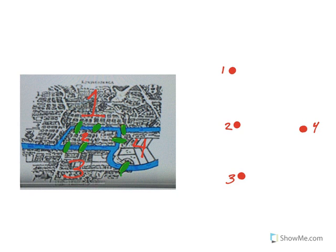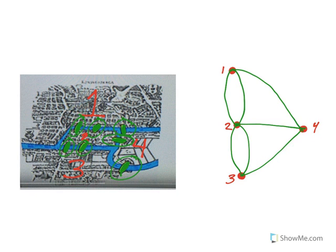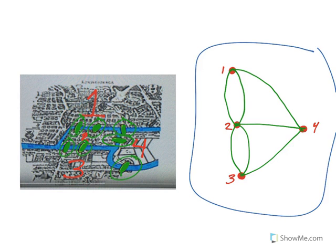Now, when you think about the bridges, there are two bridges that connect one and two. There are two bridges that connect two and three. There is one bridge that connects two and four, one bridge that connects three and four, and one bridge that connects one and four. So this becomes the graph that would represent this picture of bridges.